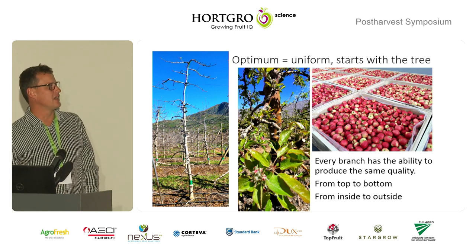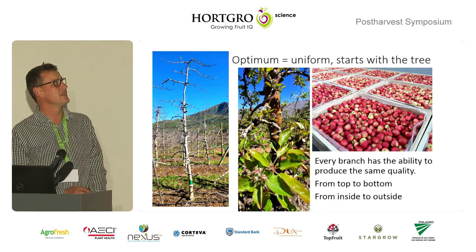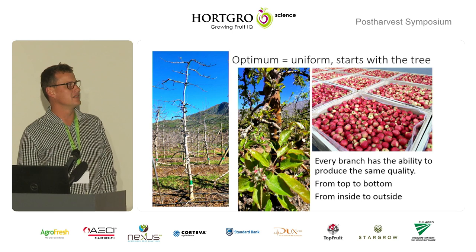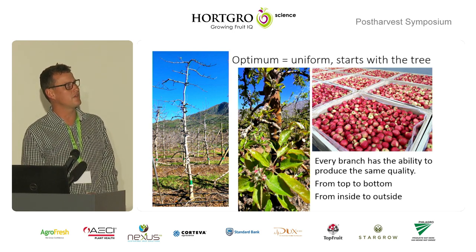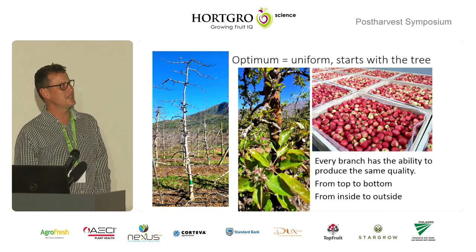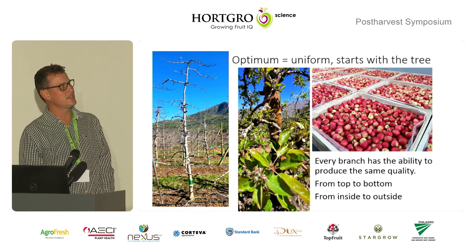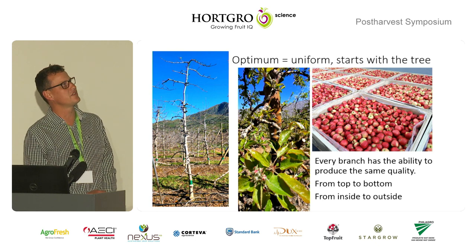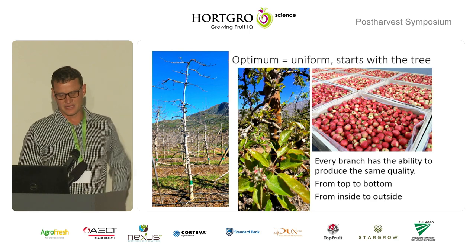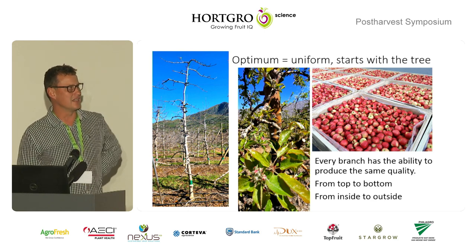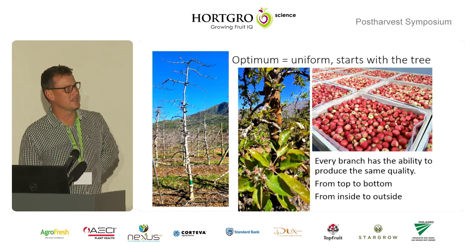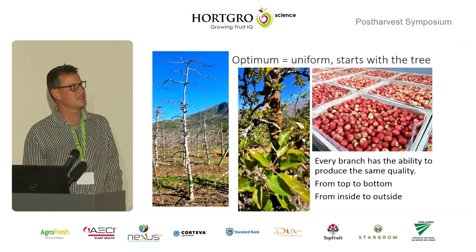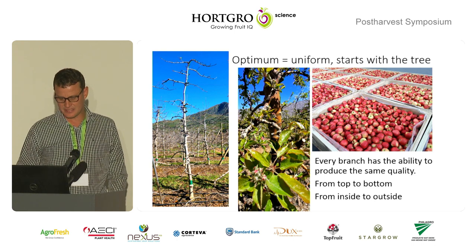So what does the optimum tree structure really look like? If we look at this picture, we can see that we have spaces between the branches and every branch really has the potential to get the same amount of light on it. We can get good spur leaves and cluster leaf development from the inside of the canopy to the outside. Even on older trees and older structures, you can get the same quality of flowers from the inside to the outside. By just reducing the canopy structure and making it less complicated, we can already end up with a product that looks like this in a bin — great uniformity in colour and size.